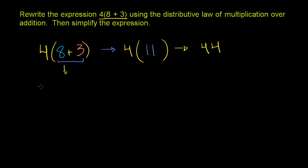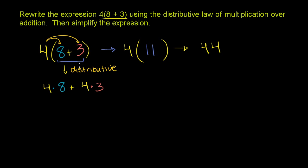So this is going to be equal to 4 times 8 plus 4 times 3. A lot of people's first instinct is to just multiply 4 times the 8, but no — you have to distribute the 4. You have to multiply it times the 8 and times the 3. This right here is the distributive property in action. When you evaluate it, 4 times 8 is 32, and then 32 plus 4 times 3 — 4 times 3 is 12.